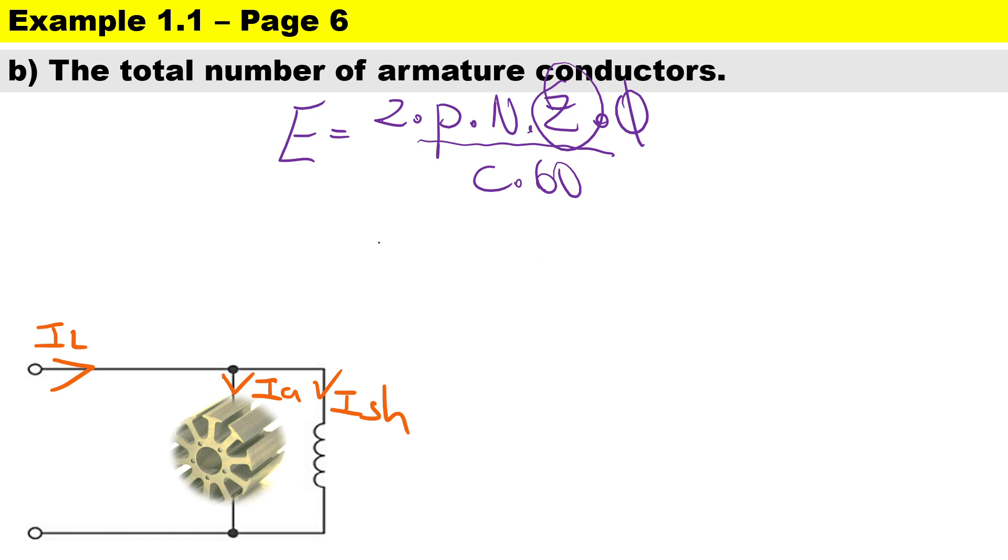We need to calculate Z, which is the total number of armature conductors. So Z is going to be equal to E times the number of parallel paths times 60, all over 2 times pole pairs times the speed times the flux.